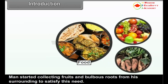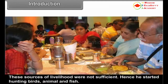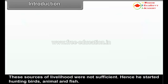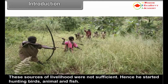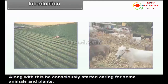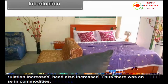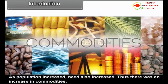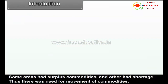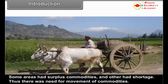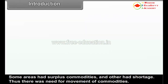Man started collecting fruits and roots from his surroundings to satisfy this need. These sources of livelihood were not sufficient. Hence, he started hunting birds, animals and fish. Along with this, he consciously started caring for some animals and plants. As population increased, need also increased. Thus, there was an increase in commodities. Some areas had surplus commodities and others had a shortage. Thus, there was a need for movement of commodities. This was the beginning of trade.